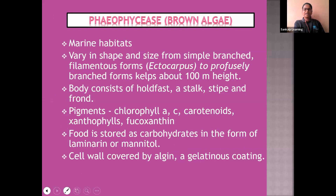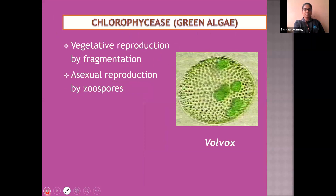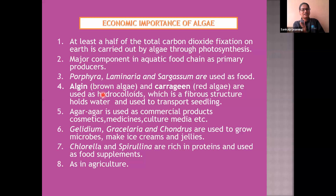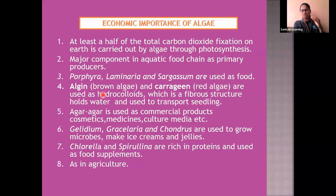Algin is the wall layer of brown algae, and carrageenan is from red algae. Both these substances are used as hydrocolytes, which are fibrous in structure. They hold water for a longer time and are used to transport seedlings or plantlets.